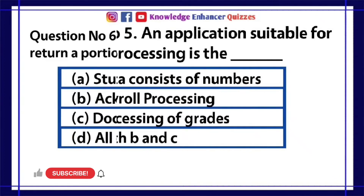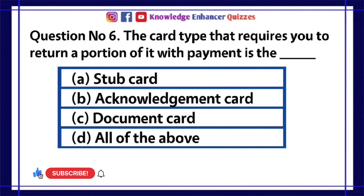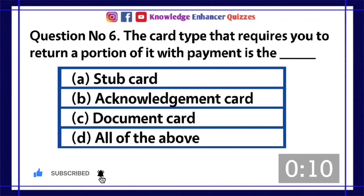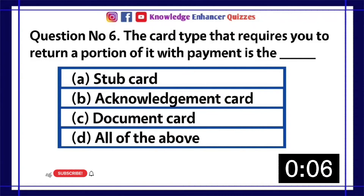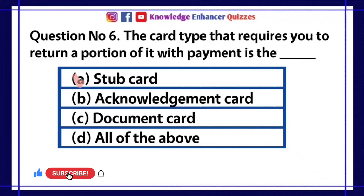Question number 6. The card type that requires you to return a portion of it with payment is dash? A. Stub Card. B. Acknowledgement Card. C. Document Card. D. All of the above. Option A is the right answer.